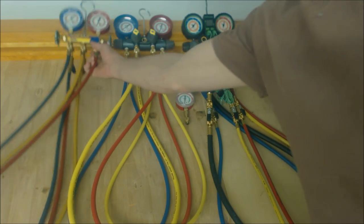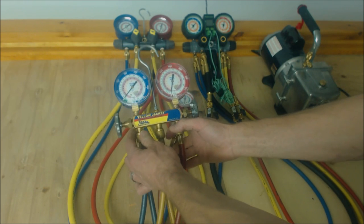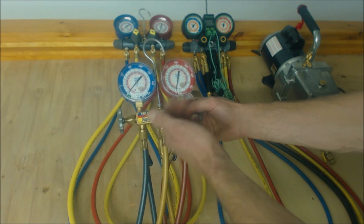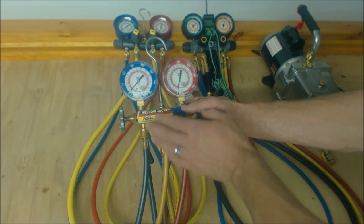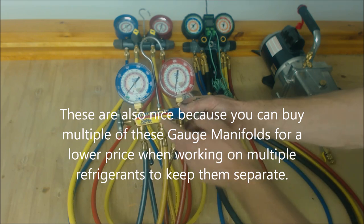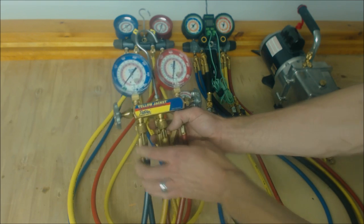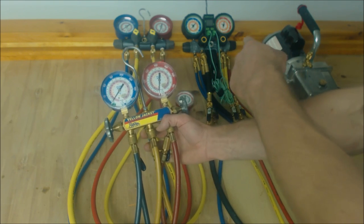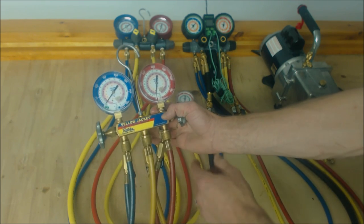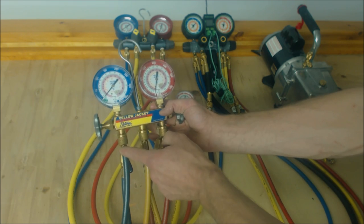They're fairly cheap. Now we can go over the two valve three port refrigeration manifold gauge set. This set would be maybe for somebody starting out. I actually have three of these or four if you're a professional doing it every day. This handle will connect your service hose to your low side. When you open that up, this handle is going to connect your service line to your liquid line.